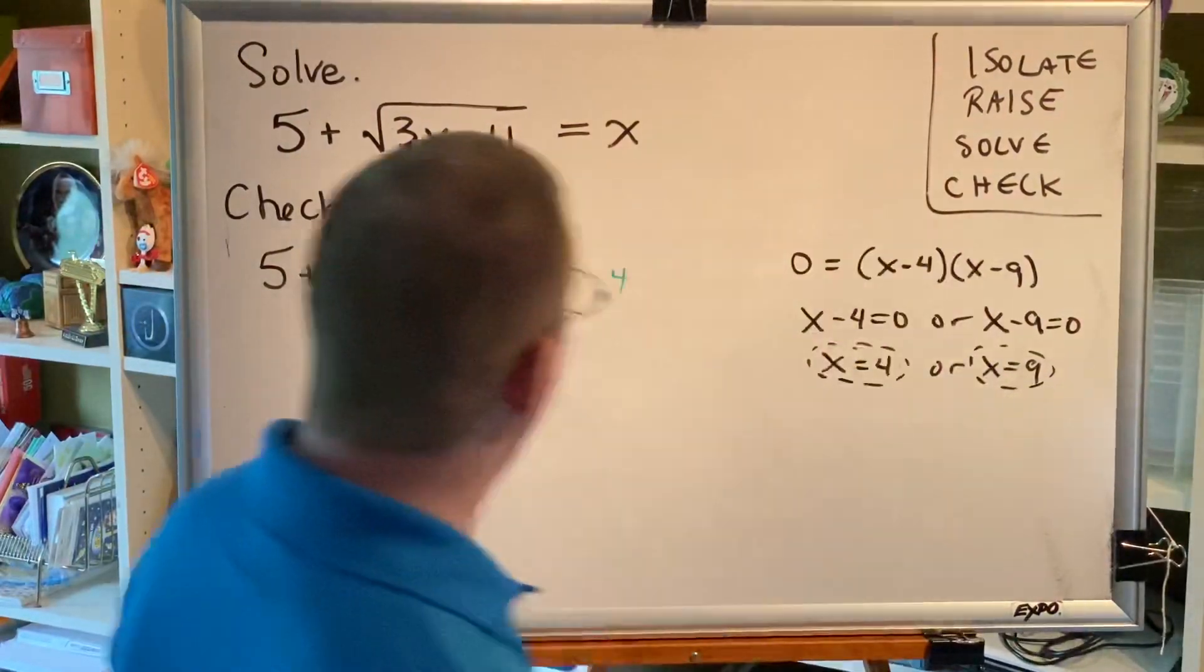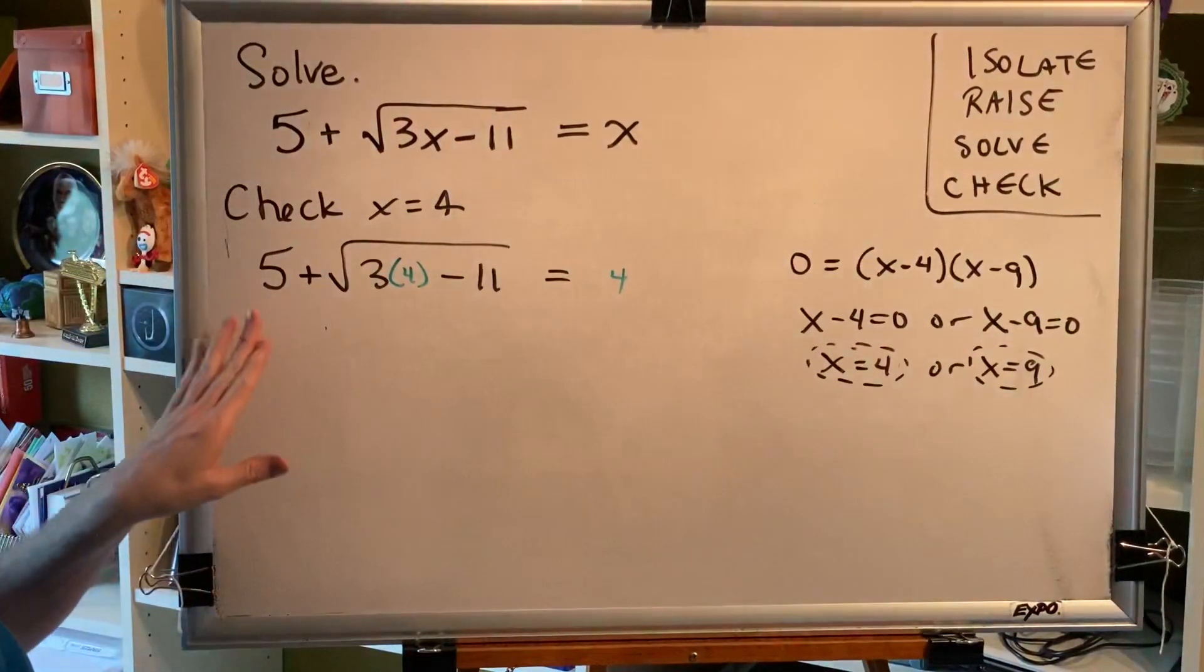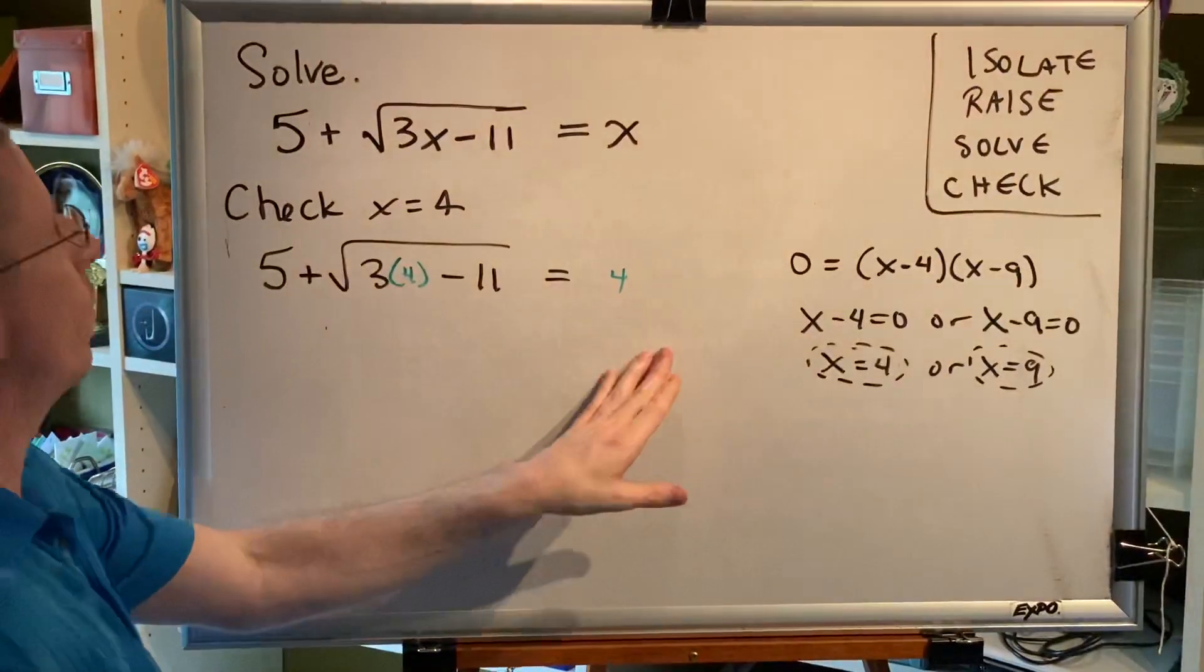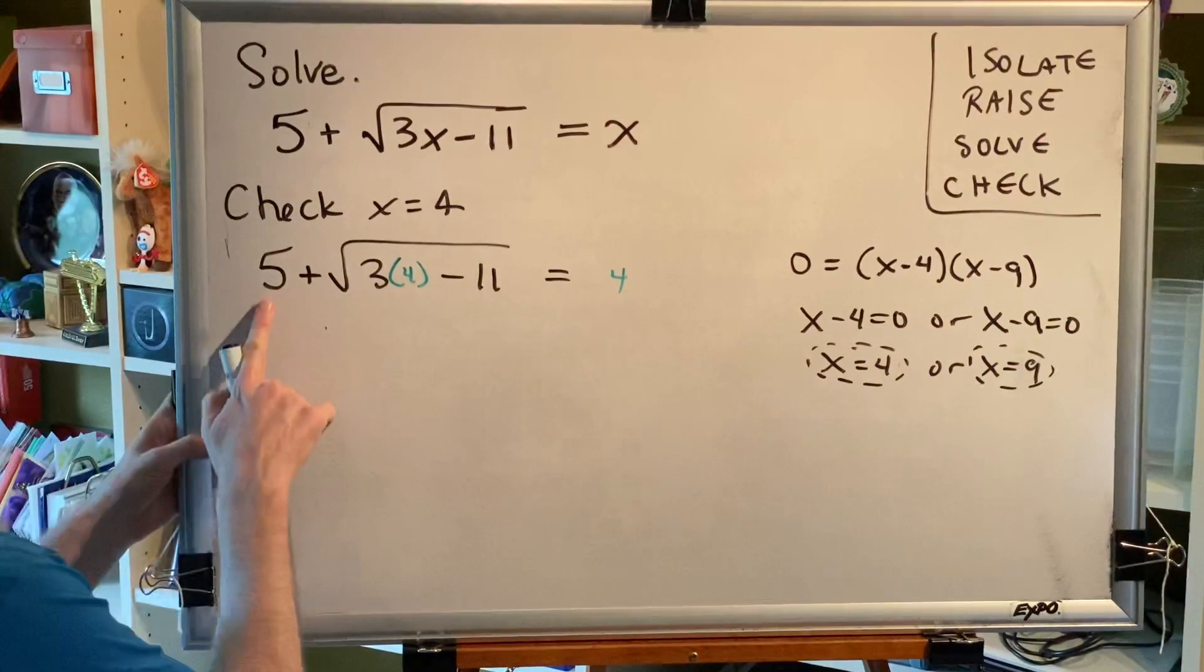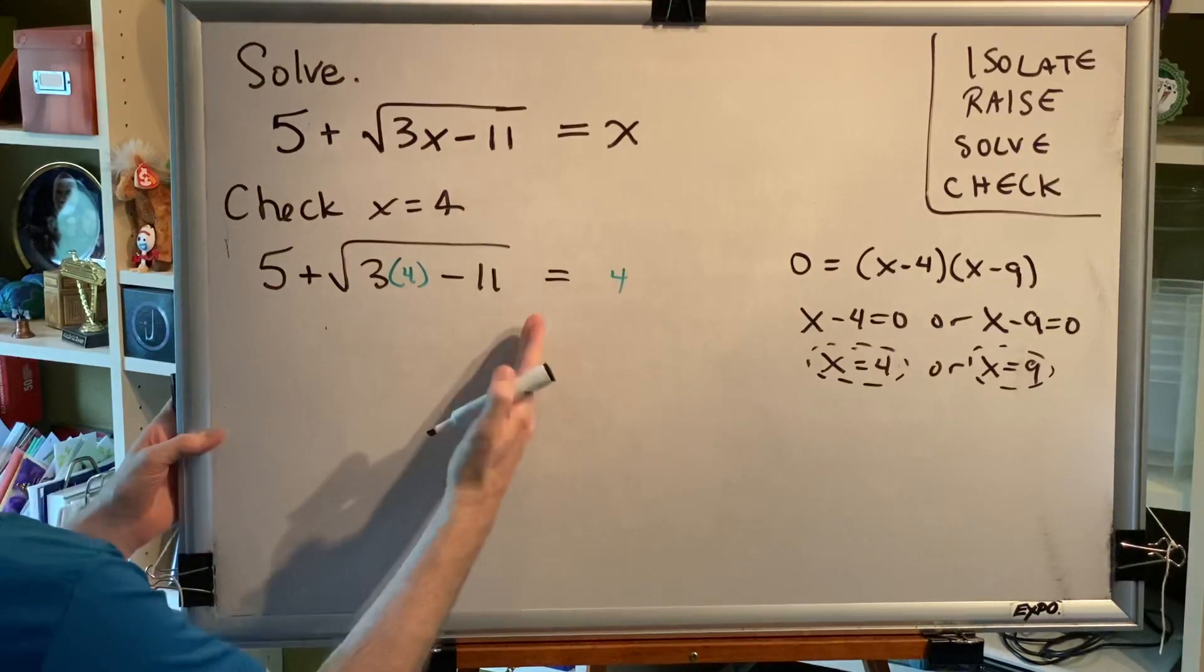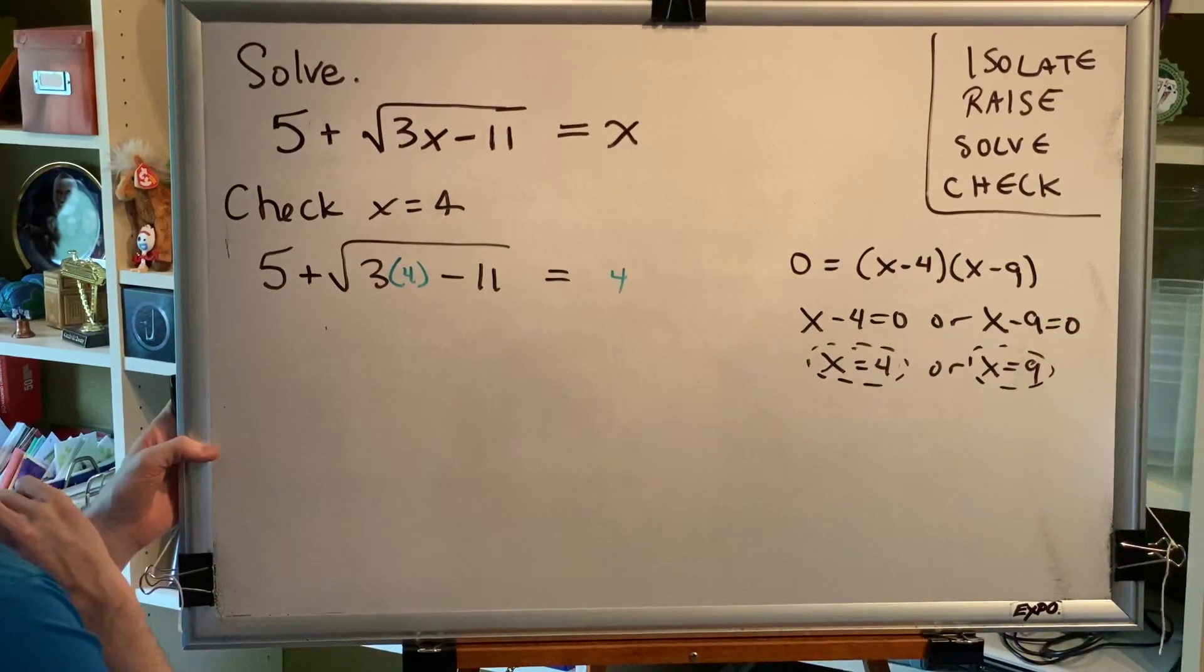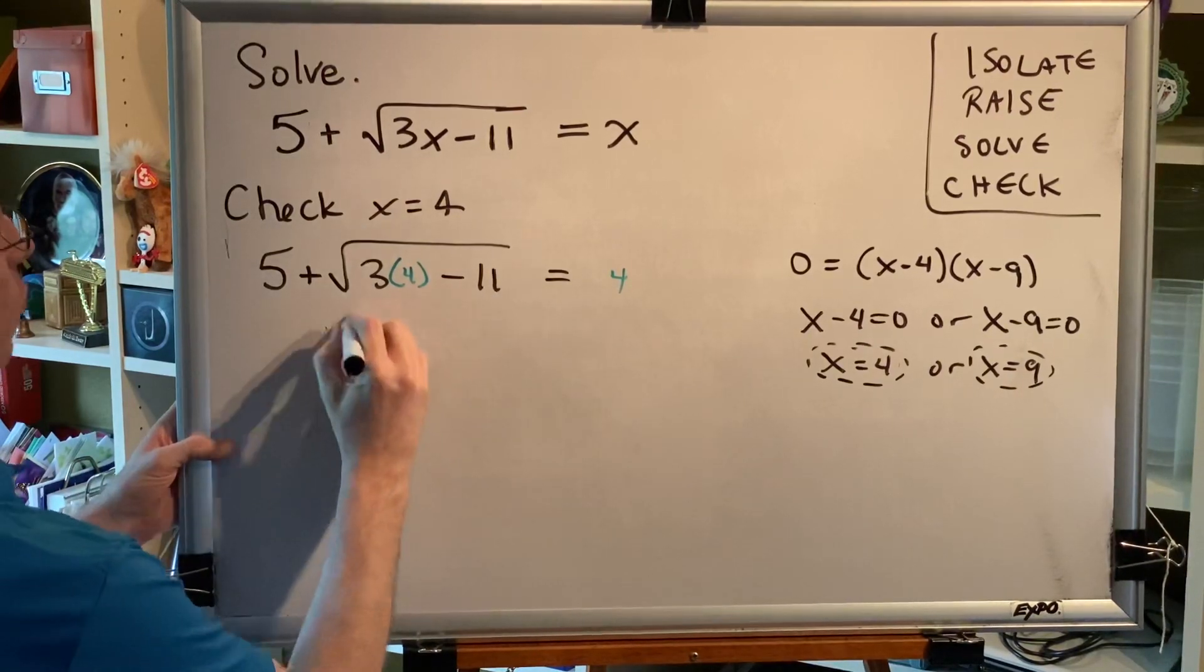Without using properties of equality, we will determine what is the value on the left side, what is the value on the right side, and we will compare. We will not subtract 5 on both sides. Instead, we will simply follow order of operations and determine what number is on the left side of this equation. 3 times 4 is 12.